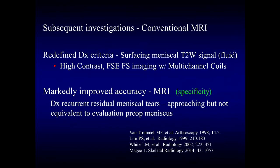Because of these problems, subsequent investigations into diagnostic criteria of a recurrent or residual meniscal tear with conventional MR imaging have helped to refine the diagnostic criteria, looking specifically for surfacing intra-meniscal elevated T2-weighted signal or fluid signal intensity on high-contrast, high signal-to-noise modern MR imaging platforms such as FASP and ECHO imaging with multichannel coils. This has provided markedly improved accuracy, particularly increased specificity of conventional MR imaging in the diagnosis of recurrent and residual meniscal tears, approaching but not quite equivalent to the diagnostic accuracy in evaluation of the preoperative meniscus itself.